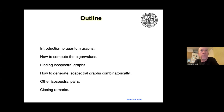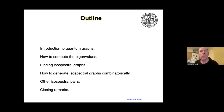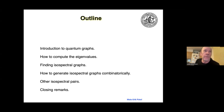I'll start with some introduction to quantum graphs, which are a bit different from different types of manifolds. How to compute eigenvalues and how to find isospectral graphs — this has been done to a large extent by computer. How to generate isospectral graphs combinatorically — there's a way to do that. Also isospectral pairs not obtained in this way, and some future outlook and closing remarks.